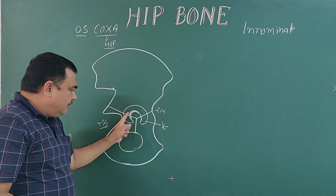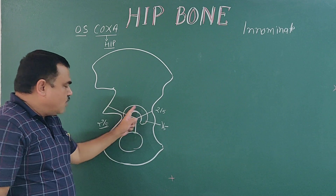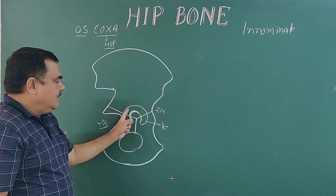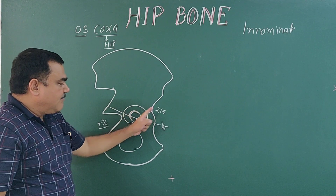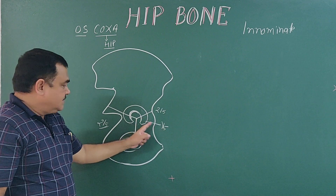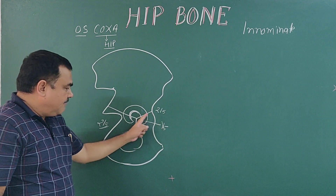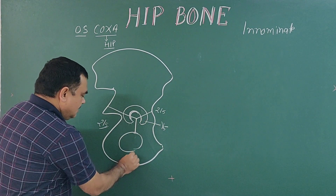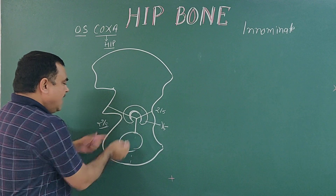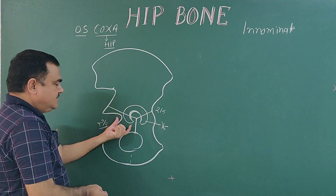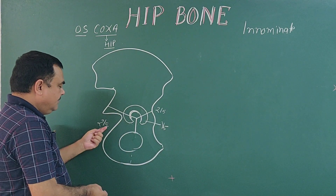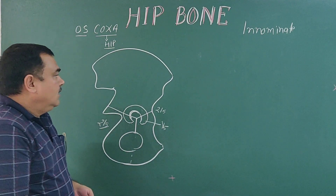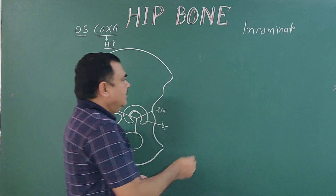This hip bone is made up of three bones: ilium forming two-fifths of the acetabulum, pubis forming one-fifth, and ischium forming two-fifths of the acetabulum.